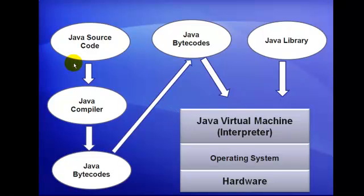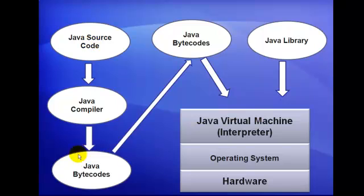Let us understand this with the help of another figure. Here we have Java source codes. They are forwarded to the Java compiler. The Java compiler converts the source codes into Java bytecodes. Now the Java bytecodes, along with the Java library, are forwarded to the Java Virtual Machine.